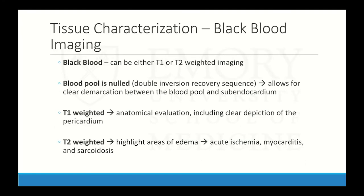For tissue characterization, the first to know about is black blood imaging, which can be either T1 or T2-weighted. The blood pool is nulled — made dark — creating demarcation between the myocardium and the dark blood pool. T1-weighted images are good for anatomical evaluation and include a clear depiction of the pericardium. T2-weighted images highlight areas of edema — water is bright, so states of acute ischemia, myocarditis, or sarcoidosis will appear bright on these images.